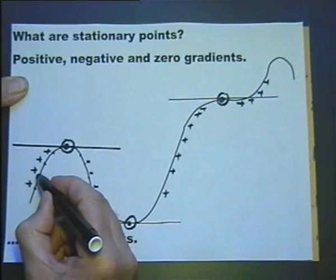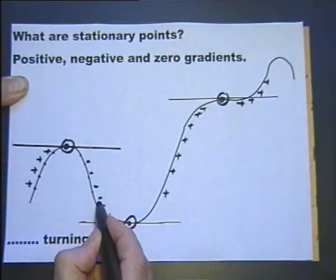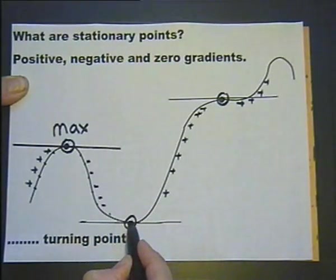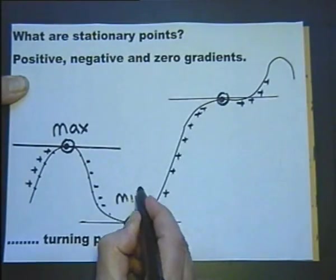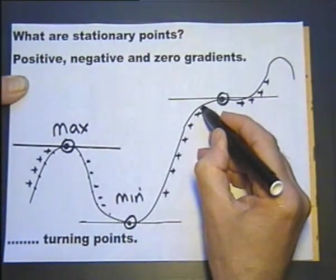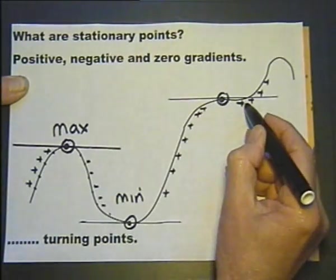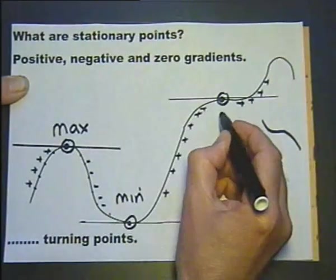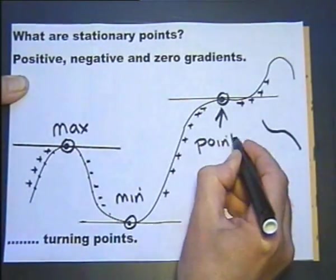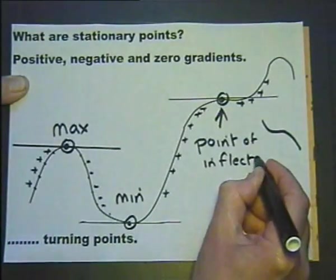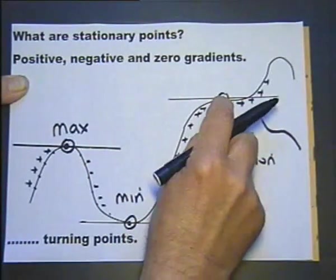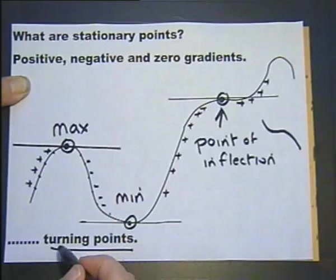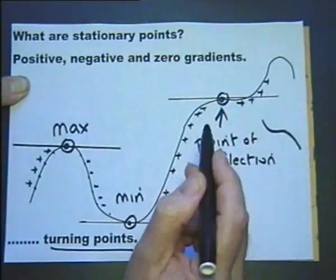These are called stationary points. If the gradient before the stationary point is positive and after is negative, we call that a maximum. If the gradient before is negative and after is positive, we call that a minimum. If the gradient before and after the stationary point is the same — positive, zero, positive, or negative, zero, negative — we call this a point of inflection. A maximum and a minimum are called turning points. All three together are called stationary points.